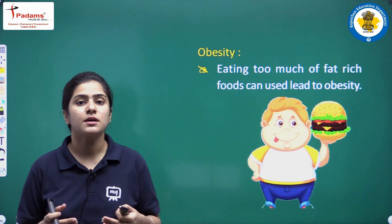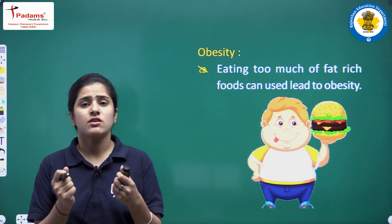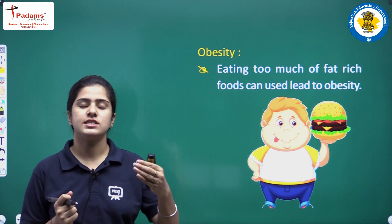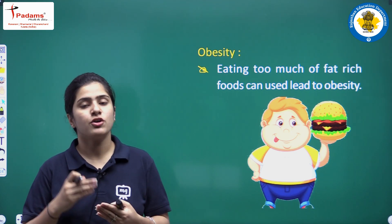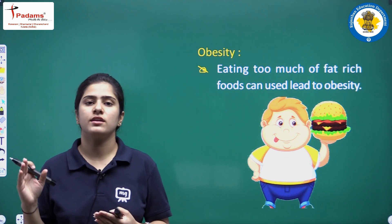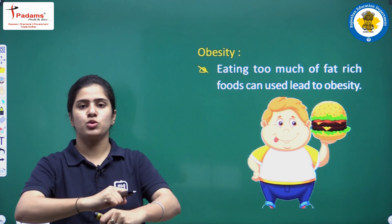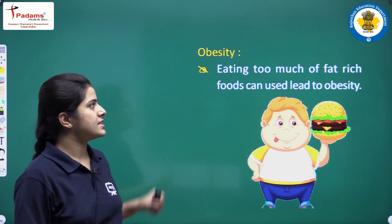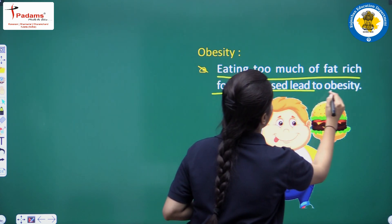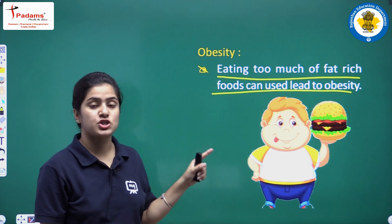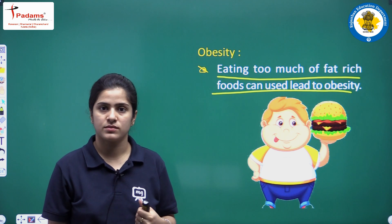First we will be discussing about obesity. When you eat foods that are rich in fats — like burgers, french fries, aloo paratha — on a regular basis, it will lead to a condition called obesity. Eating too much fat-rich food regularly is what causes obesity.